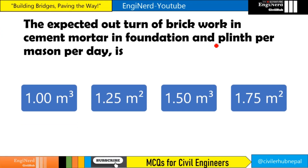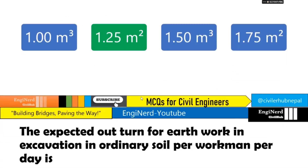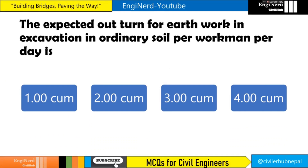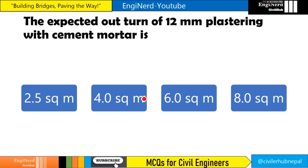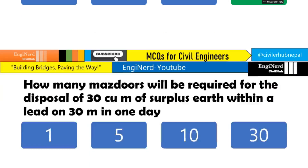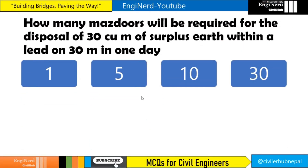The expected outturn of brickwork in cement mortar in foundation and plinth is 1.25 cubic meter per mason per day — more in foundation and plinth. The expected outturn for earthwork in excavation in ordinary soil is 3 cubic meter per workman per day. The expected outturn of 12 mm plastering with cement mortar is 8 square meter per mason per day — 12 mm is nearer to 8.